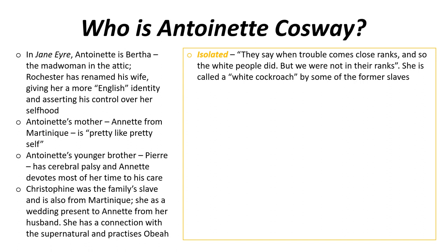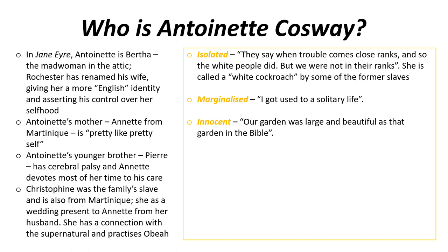And then the 'we' — that pronoun in the second sentence — is her identifying herself with her mother and her brother. Antoinette also feels marginalised in the novel. She says she got used to a solitary life — separate from the people in Spanish Town, separate from the former slaves, and separate really in her own little world at the beginning of the novel.